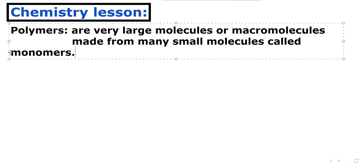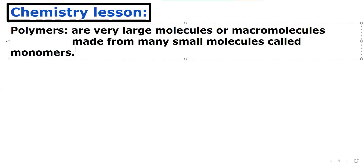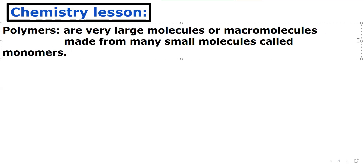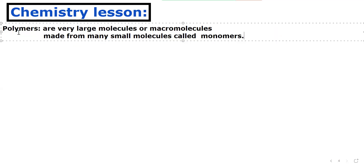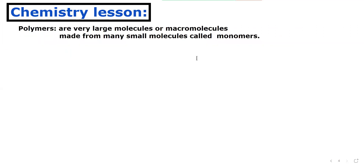Now we will talk about what polymerization is. Polymerization is the process in which polymers are formed from monomers — specifically, the process of joining hundreds or thousands of monomers together.